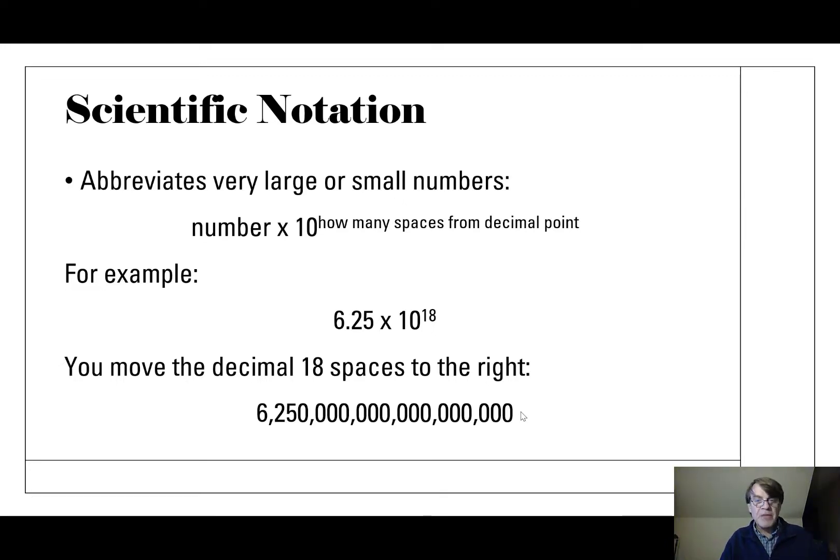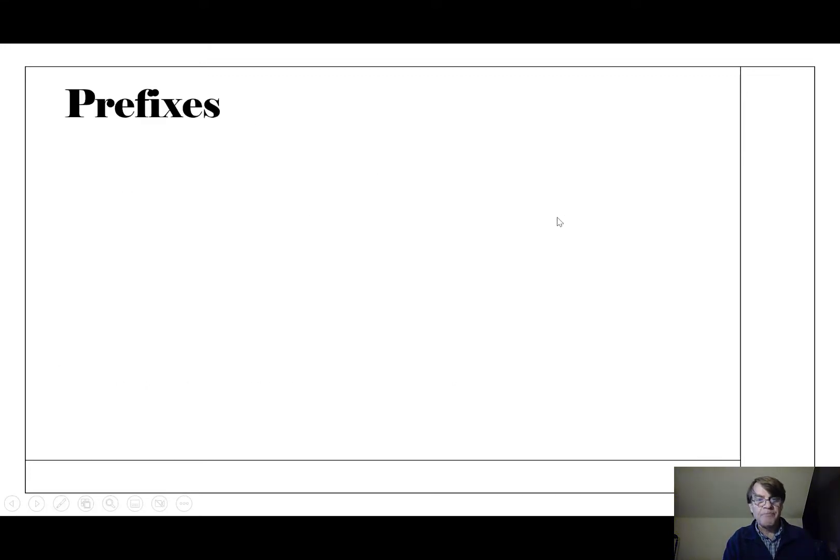That's how we do it. Instead of having to say hundreds, thousands, millions, billions, trillions, quadrillions, quintillions, rather than having to say all that stuff, we can just write it like this. It's not really that hard. It might take you a second to kind of figure it out. It's number times 10 to how many spaces from the decimal point.